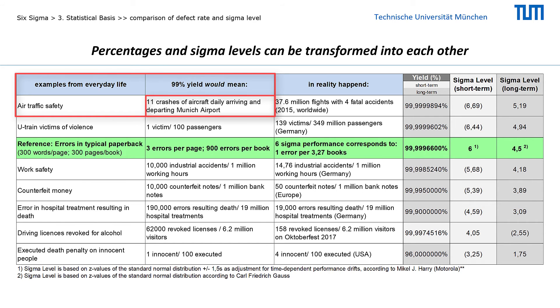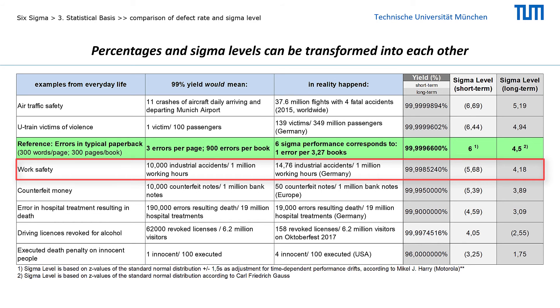As you can see, a 99% yield in air traffic would probably frighten us so much that no one would fly voluntarily. In fact, however, safety in air traffic is 99.9999894 percent, which corresponds to a long-term sigma level of 5.19. Safety at the workplace and in hospitals is also very high, but already significantly lower.